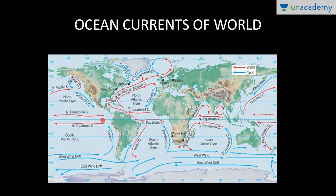In the South Pacific we also have a warm current, the South Equatorial Current. Similarly, in the North Pacific Ocean we have the North Equatorial Current and the warm current Kuroshio, which moves from the equator towards the poles. Then again we have the cold current Oyashio, which flows from the poles towards the equator. And these are the ocean currents in the Indian Ocean.